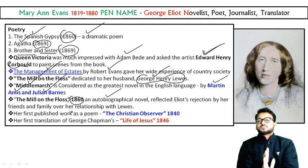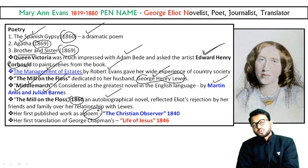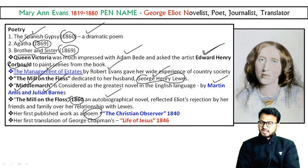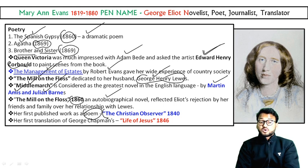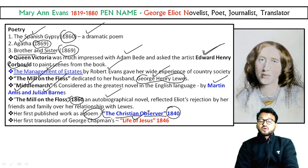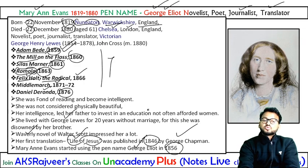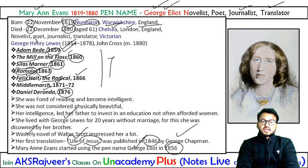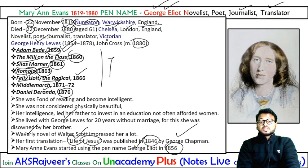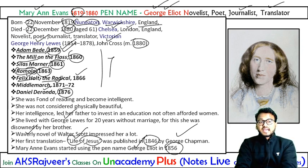She published her first work as a poem, since she was a poet, journalist, translator, and novelist. Her first poem was 'The Christian Observer' during 1840. Then she did the translation Life of Jesus, which was translated by her in 1846. She married twice — George Henry Lewes was her companion for over 20 years, and after his death, she married John Cross in 1880, the same year she died.